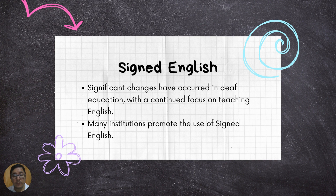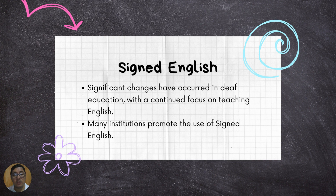In recent years, significant changes have occurred in deaf education, with a continued focus on teaching English in its written form to facilitate communication between the deaf and hearing communities. Many institutions promote the use of Signed English, also known as Manually Coded English or MCE. Signed English involves using signs that correspond to English words in English sentence structures, which is particularly beneficial for hearing parents of deaf children.